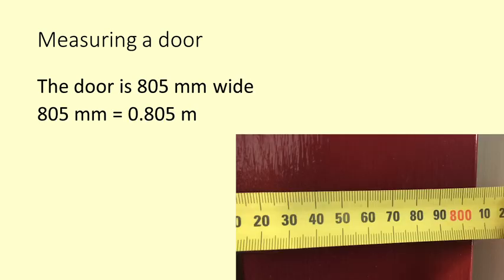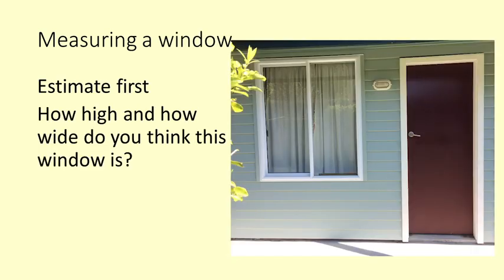The door is 805 millimetres wide. 805 millimetres is 0.805 metres. Let's measure this window. First estimate. How high and how wide do you think this window is?